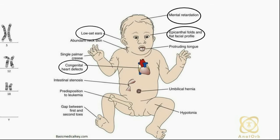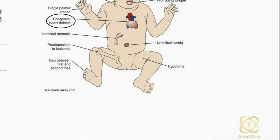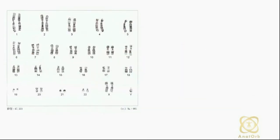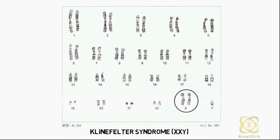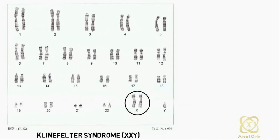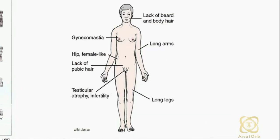Another example of an extra copy abnormality is Klinefelter syndrome. Klinefelter syndrome occurs when a male is born with an extra X chromosome. It is associated with testicular atrophy, infertility, and gynecomastia.